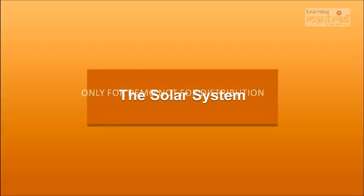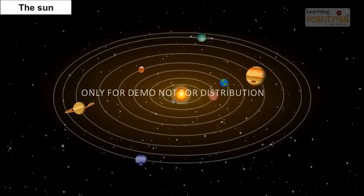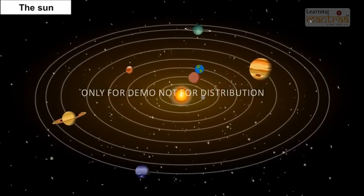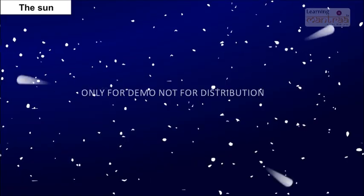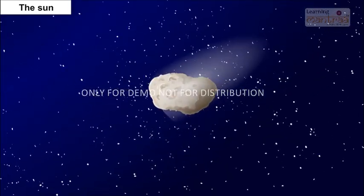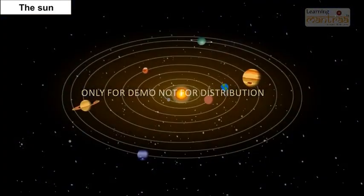The Solar System. The Sun, the eight planets, satellites, and some other celestial bodies known as asteroids and meteoroids form the solar system.